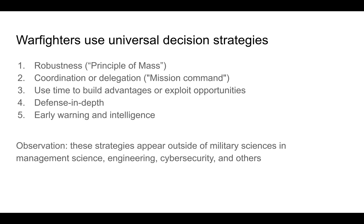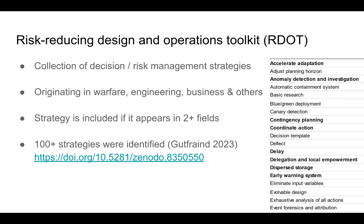Over the last couple of years, I've been collecting and cataloging strategies used for decision-making under uncertainty — strategies that help make decisions or reduce risk. I call the catalog R.DOT, the Risk-Reducing Design and Operations Toolkit. The list has been created by looking at papers and monographs from different areas, including engineering and operations research, as well as other fields. This is by no means a complete list. In order to be included in R.DOT, a strategy had to appear in two different fields. I highlighted strategies that are particularly relevant and appeared in military sciences but also in at least one other area.